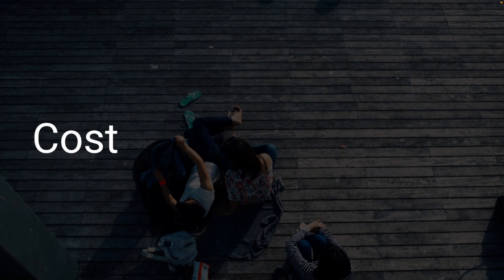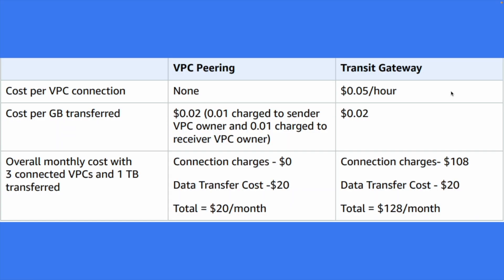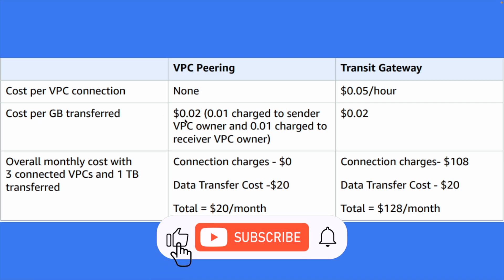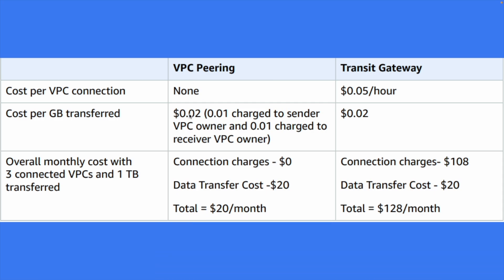In terms of cost, VPC peering is much cheaper. The cost per VPC connection for VPC peering is zero — you can create any number and it won't charge you. But with Transit Gateway you pay $0.05 per hour for every new VPC connection. The cost per GB transferred is the same in both cases: $0.02 per GB. As an example, if you're transferring 1 TB of data, the comparison becomes clear.